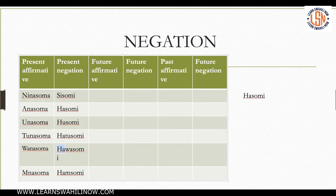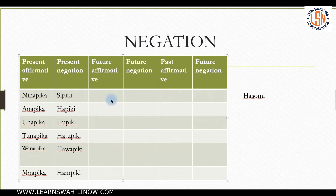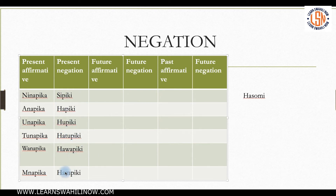Let's try it with another verb to confirm. I've chosen the verb 'pika' — to cook. So: ninapika, anapika, unapika, tunapika, wanapika, mnapika. Negated: sipiki, hapiki, hupiki, hatupiki, hawapiki, hampiki. Quite straightforward.